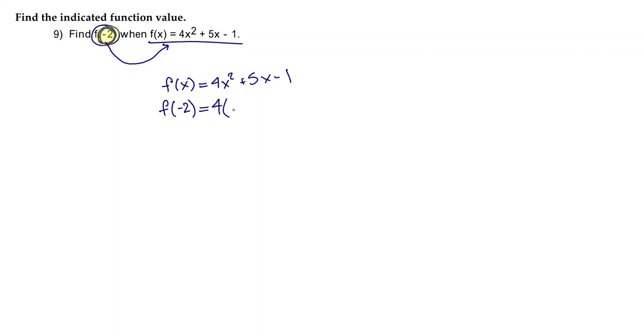I'm going to write 4 times negative 2 squared plus 5 times negative 2 minus 1. And that is literally all there is to it. Now all we're going to do is just simplify this as much as we can.